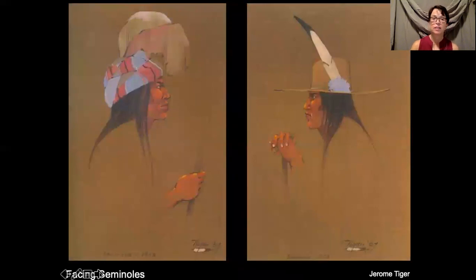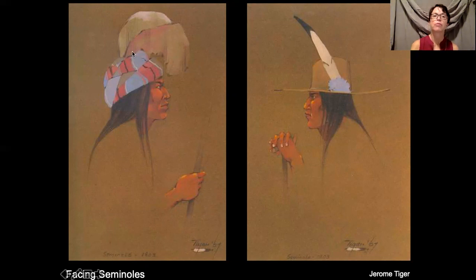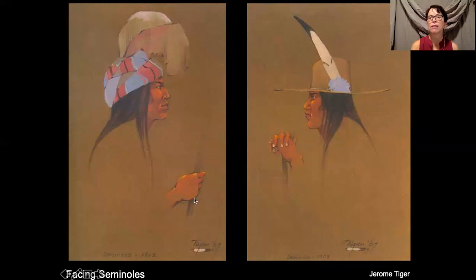This picture shows "Facing Seminoles" — if you look closely, you can see the dates 1803 and 1903. This painting shows how the Seminoles changed over a hundred years with the influence of white settlers. For hundreds of years the Seminoles dressed with a wrapped headpiece and plume, but as white settlers became more of an influence, they changed their look — the feather style changed and they started wearing hats more typical of white settlers. This subtly shows how they were losing their culture as they got exposed to the white settlers.